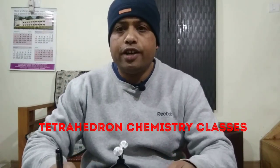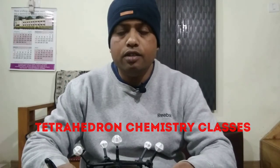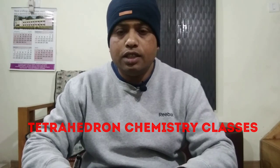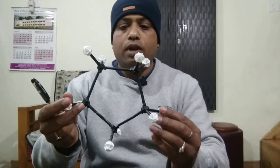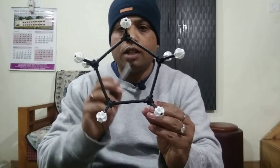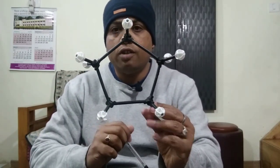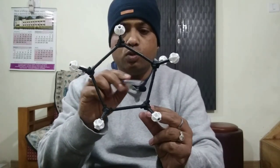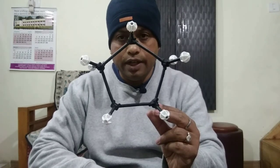Welcome back to the Tetrahedron Chemistry Classes. In today's class we will see the conformational analysis of cyclopentane. This is the cyclopentane molecule — five carbons along with 10 hydrogens, two hydrogens on each carbon atom. The bond angle between any two carbon atoms is 108 degrees, which is very close to the normal tetrahedral bond angle of 109.5 degrees.